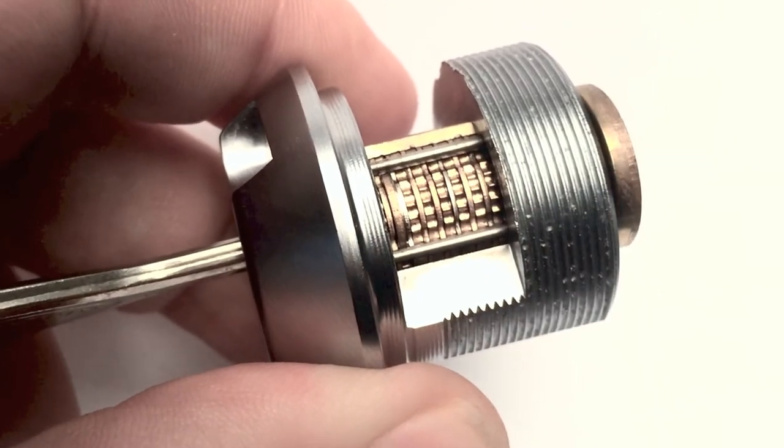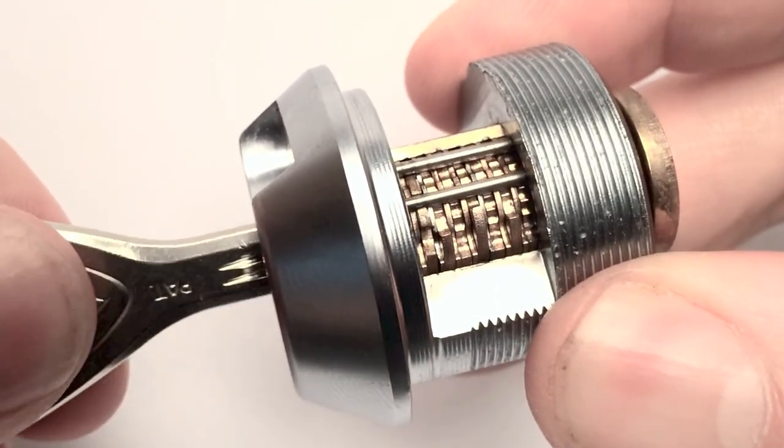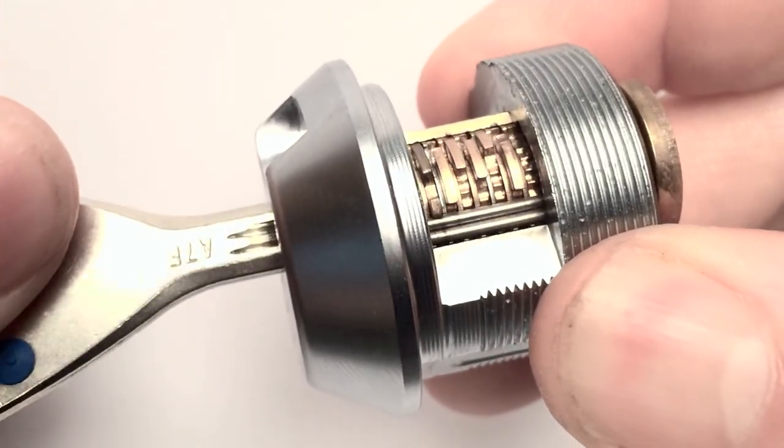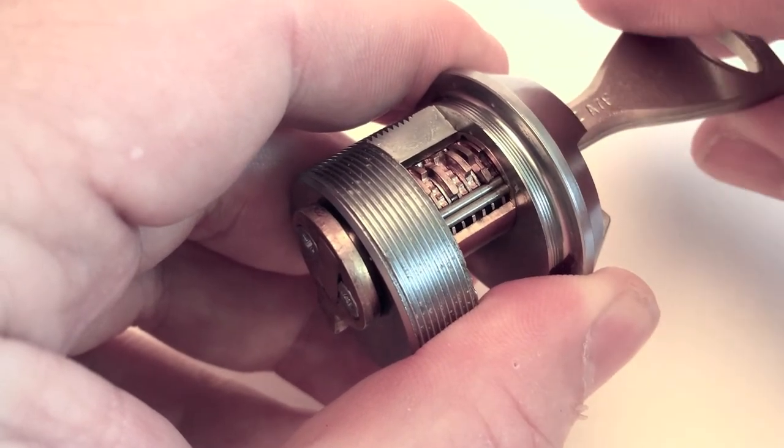The return bars have two main functions. First, they keep the discs in their starting position, and second, they rotate the discs back to their starting position after a clockwise or counter-clockwise rotation to ensure the discs are scrambled.